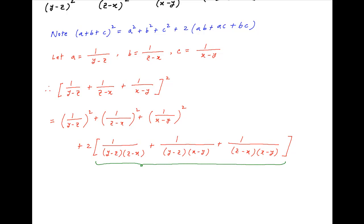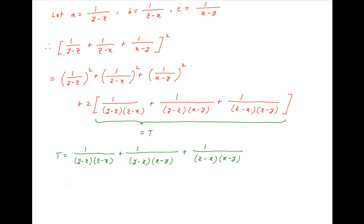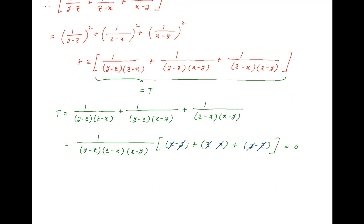Now let's denote the expression in the square brackets on the right-hand side by t. Evaluating t separately: t = 1/[(y−z)(z−x)] + 1/[(y−z)(x−y)] + 1/[(z−x)(x−y)]. Taking the common denominator (y−z)(z−x)(x−y), we get t = [(x−y) + (z−x) + (y−z)] divided by the common denominator. In the square brackets all the terms cancel, and therefore t = 0.